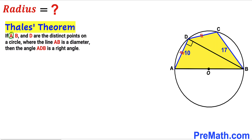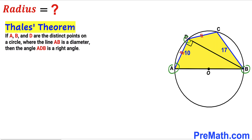According to Thales' theorem, if A, B, and D are three distinct points on a circle where line AB is the diameter, then angle ADB is a right angle — that is, 90 degrees. Since A, B, and D are vertices on this circle and AB is the diameter, angle ADB is 90 degrees.